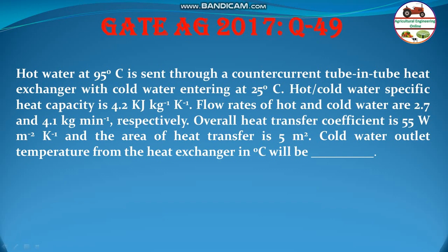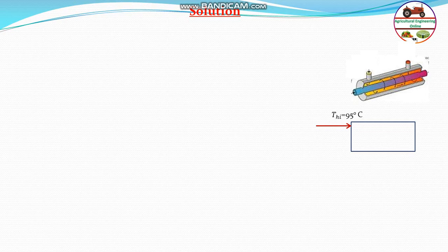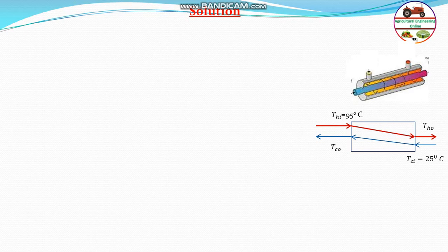It is asked to find out the cold water outlet temperature from the heat exchanger. So let us go to the solution. In a counter-current heat exchanger, the hot water inlet temperature THI is 95 degrees Celsius. The hot outlet temperature is not known. Similarly, the cold inlet temperature TCI is 25 degrees Celsius, and the cold outlet temperature TCO is to be found. The overall heat transfer coefficient U is given as 55 W per m² per Kelvin.